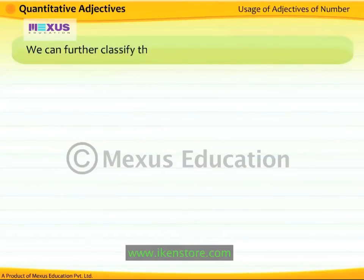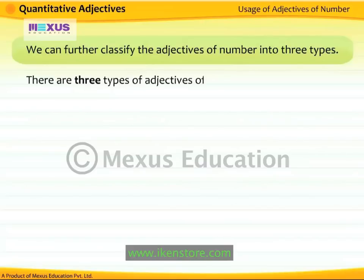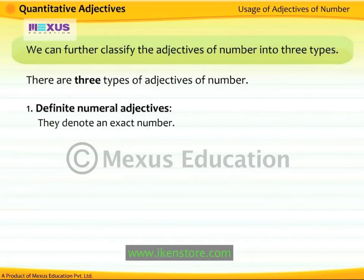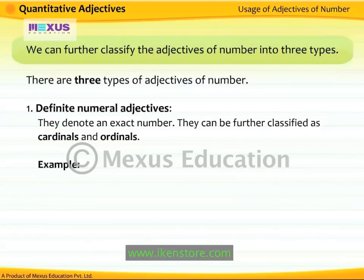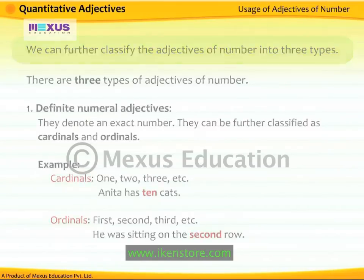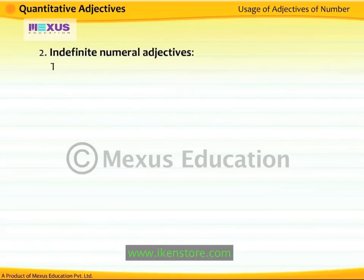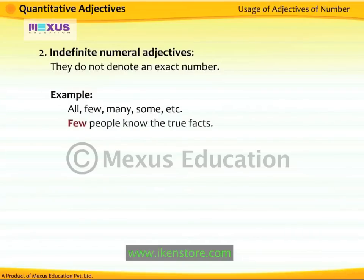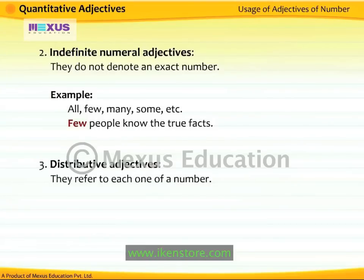We can further classify adjectives of number into three types. First, definite numeral adjectives — they denote an exact number and can be further classified as cardinals and ordinals. Second, indefinite numeral adjectives — they do not denote an exact number. Third, distributive adjectives — they refer to each one of a number.